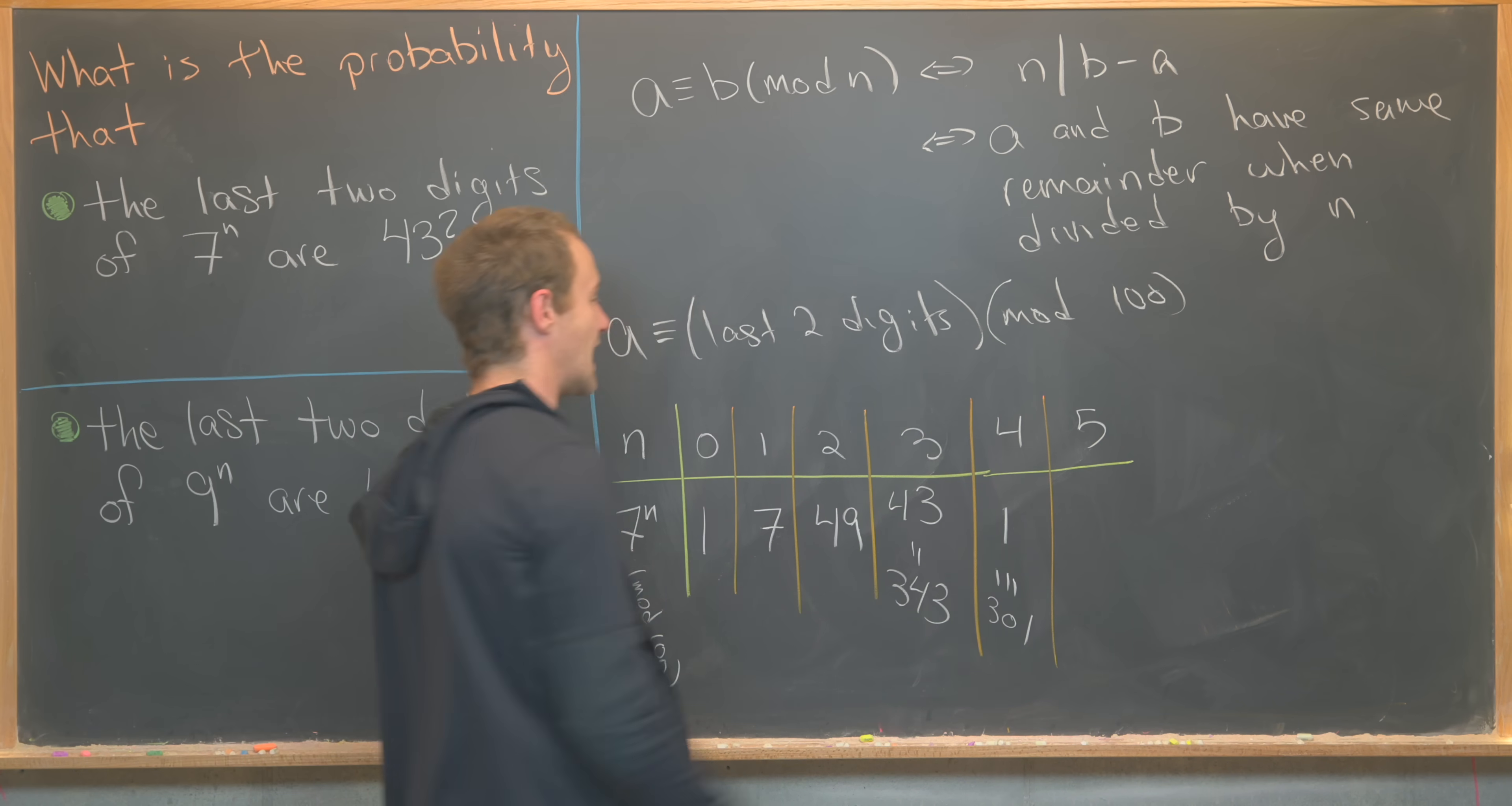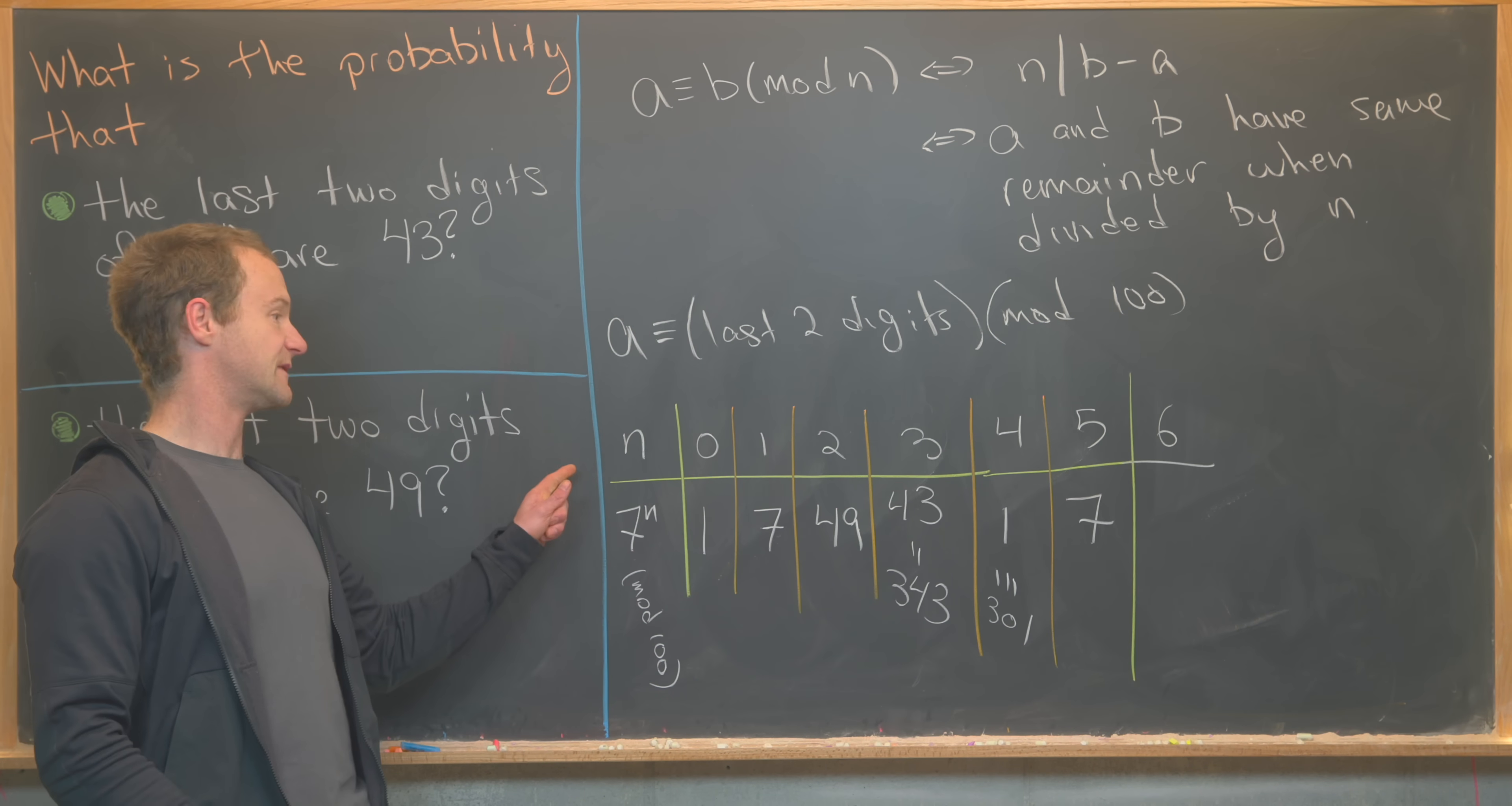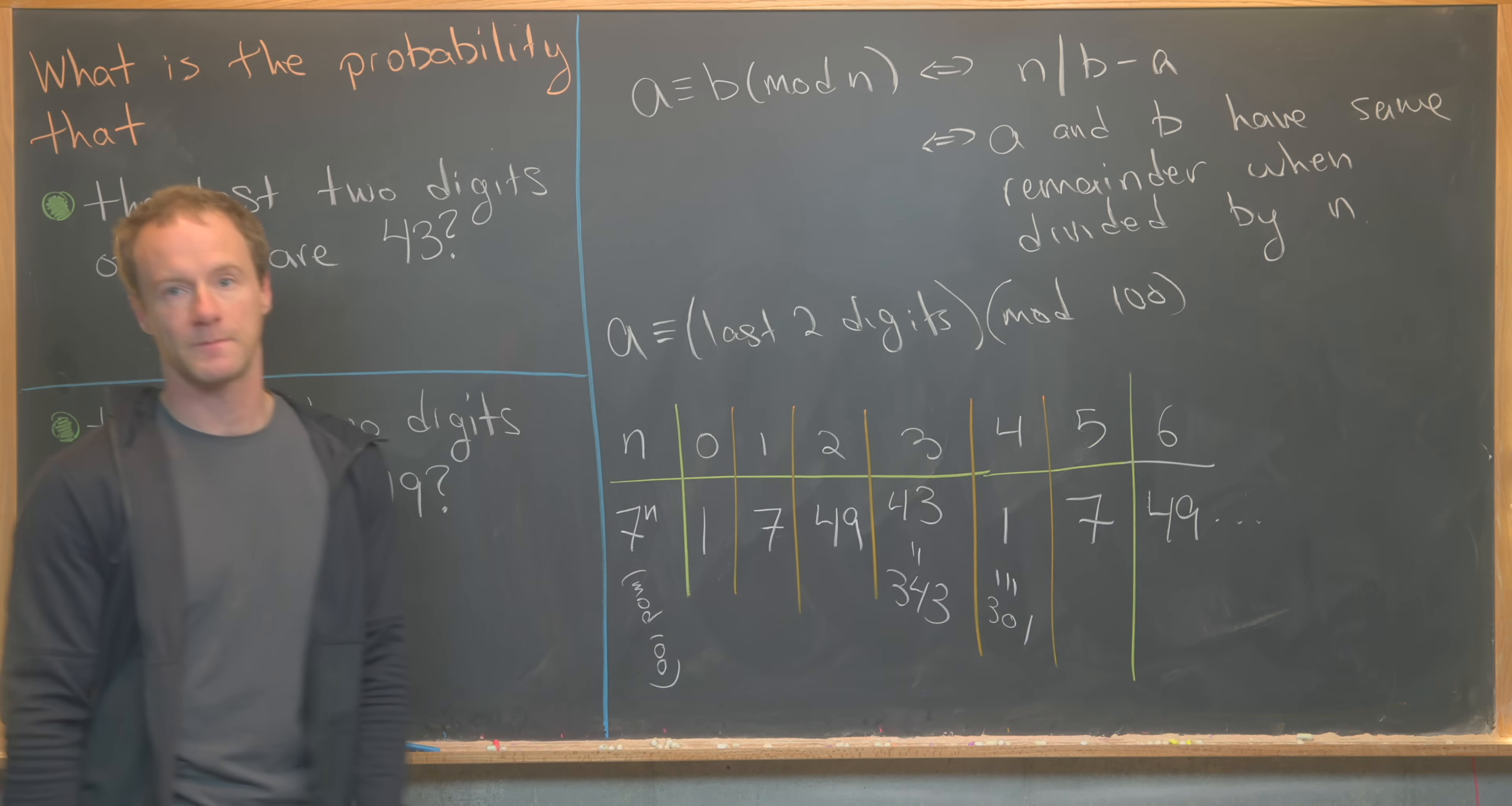That means we've landed in a position where this pattern continues to repeat. So that means 7 to the 5, well, that'll be 7 to the 4 times 7, so we get a 7 here. And then next, 7 to the 6, well, that's going to be 7 to the 5 times 7, but that's just going to be 49, and then so on and so forth.